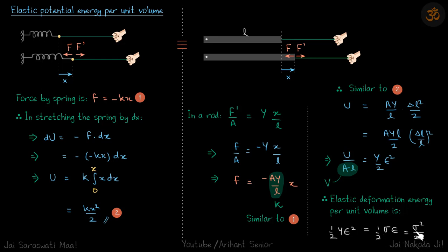So that will be Y into stress squared by Y squared, and one Y will get cancelled, so sigma squared by 2Y. So all three formulas are the same.